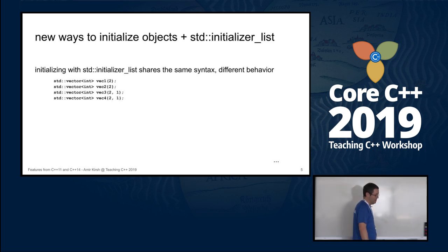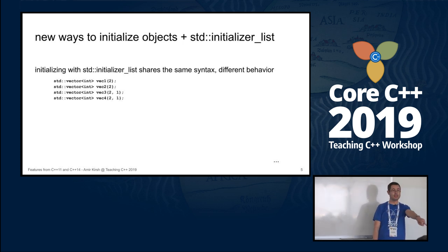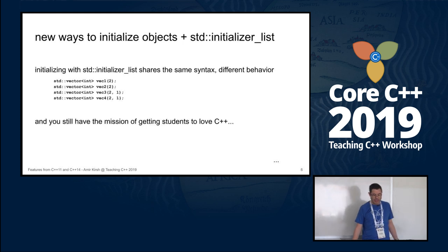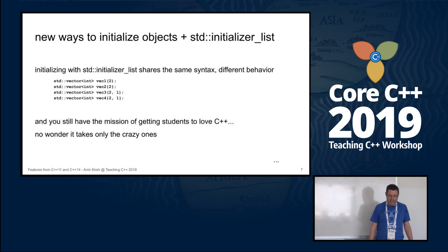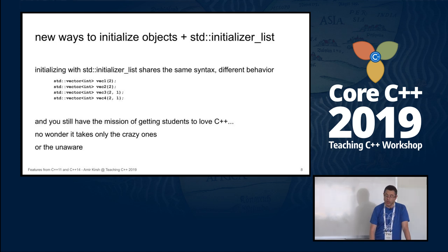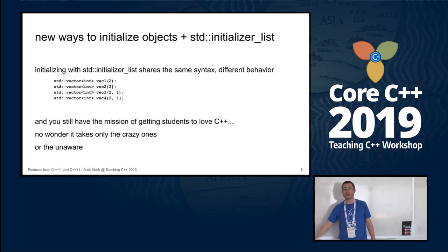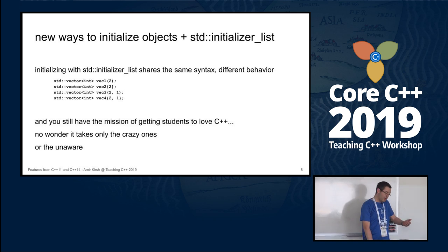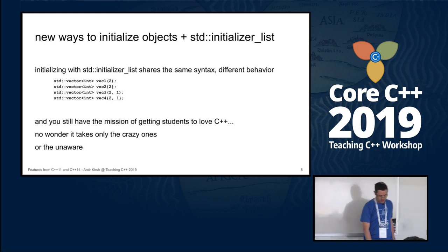I leave that as an exercise — you can check on an online compiler during the break. Students look at that and you still have the mission of getting them to love C++, especially if they're coming from Java. No wonder it takes only the crazy ones, who we meet later at conferences and meetups, or the unaware ones. We still have to get them to love C++, otherwise why teach them C++ if they're going to program in Java after?